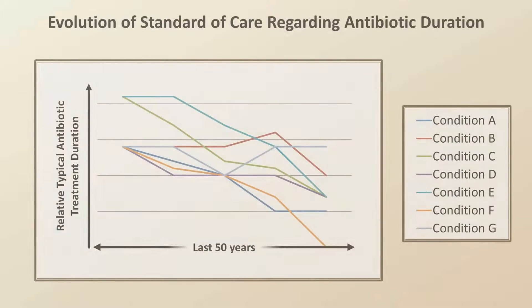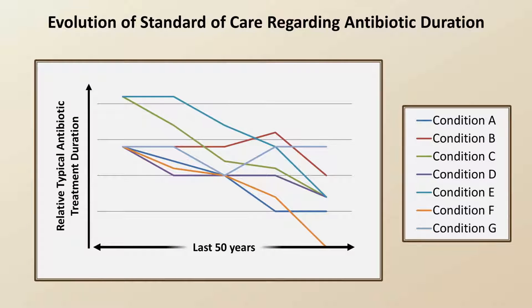There has been an interesting trend over the past 50 years regarding the standard of care when it comes to the duration of antibiotic treatment. Here is a rough approximation of what's happened for seven hypothetical infectious conditions. As time has passed, the typical durations for some have stayed roughly the same, some have gone up and then down, and some have gone down then up. But overall, the trend has been towards shorter and shorter antibiotic courses. There are even conditions now, as with hypothetical condition F, that were previously treated with antibiotics in which antibiotics are no longer recommended.